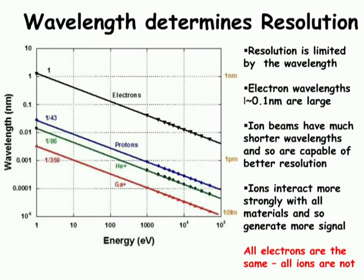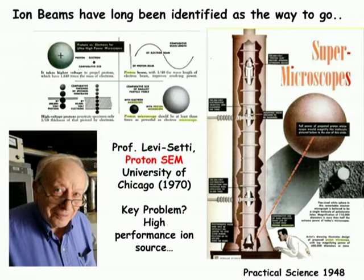Another important aspect is that ions interact much more strongly with materials than electrons. So if you want to do something to your specimen, a beam of ions is a much more effective way than electrons. Finally, with electrons you only have one thing you can do — all electrons are the same. But once you move to ions, as already mentioned, you have access to many different kinds of ions, giving you many different things to optimize.